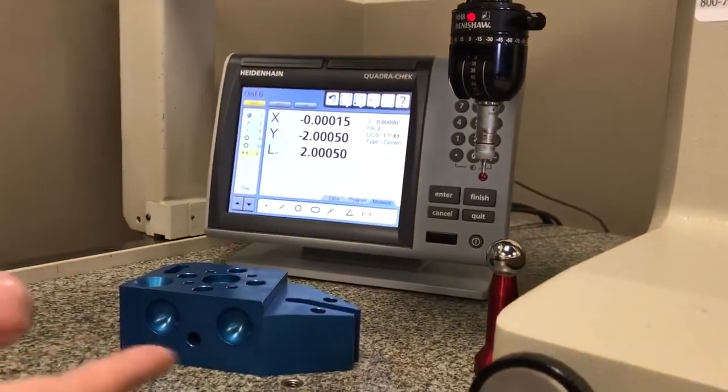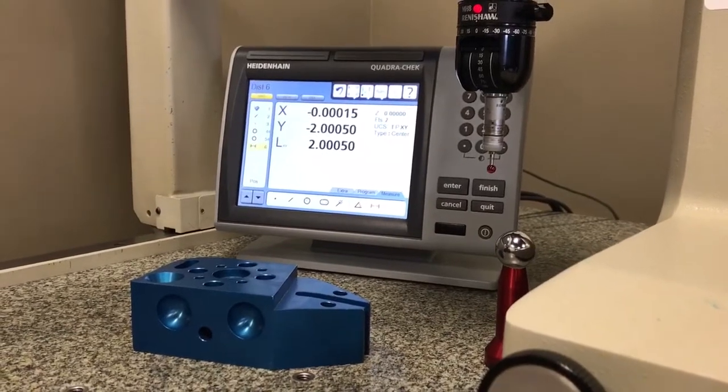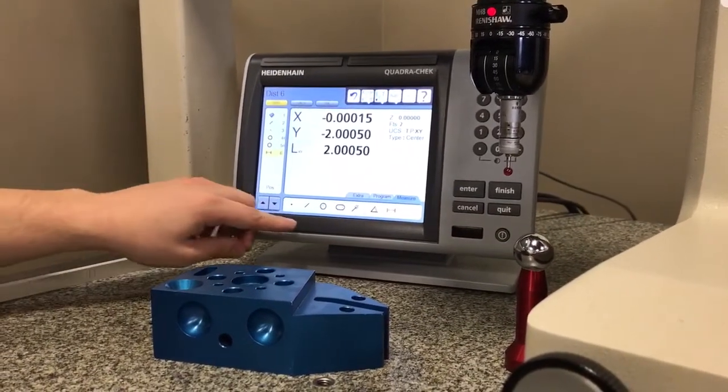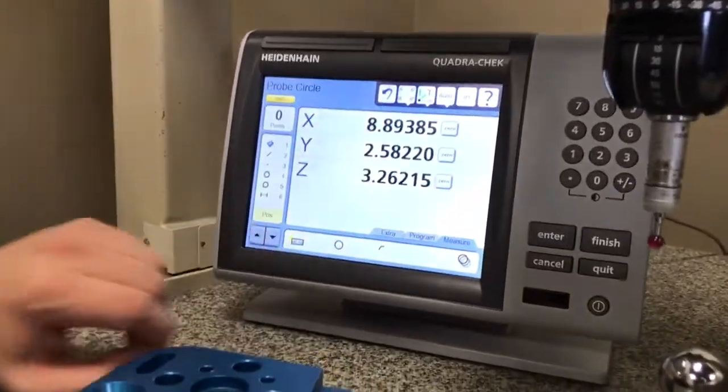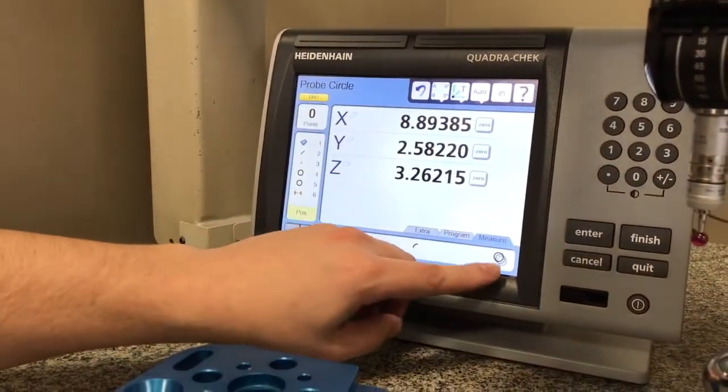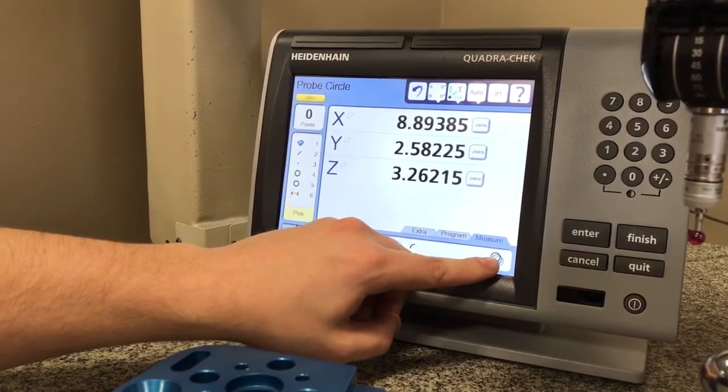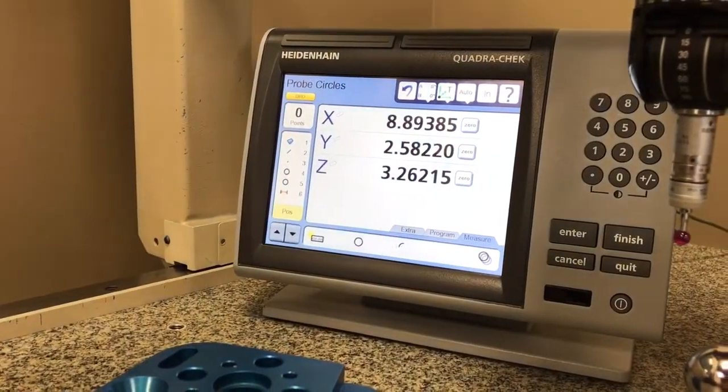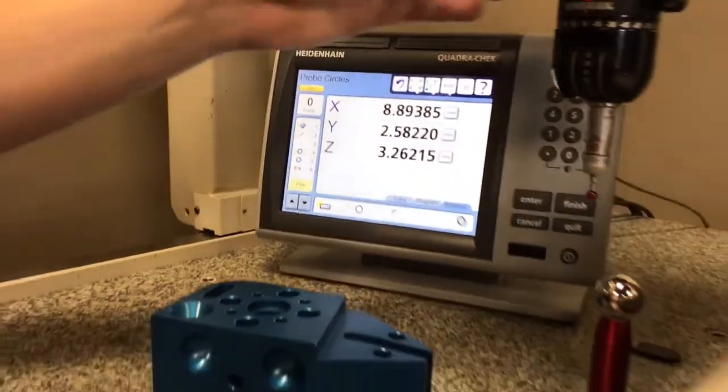Now let's say on this part you'll see there's multiple circles and I want to measure them all. I'm going to click on circle. You'll notice on top it says probe circle. I want to measure multiple of them, so I'm going to press this one for two circles. Now it says probe circles. I'm going to go ahead and do so.